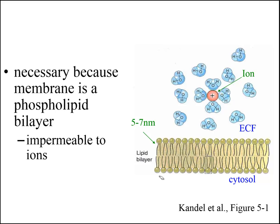Ion channels are necessary because the neuronal plasma membrane is a lipid bilayer. The lipid bilayer is essentially impermeable to ions because ions are charged particles and attract water strongly. It is therefore energetically unfavorable for ions to move through the lipid bilayer.